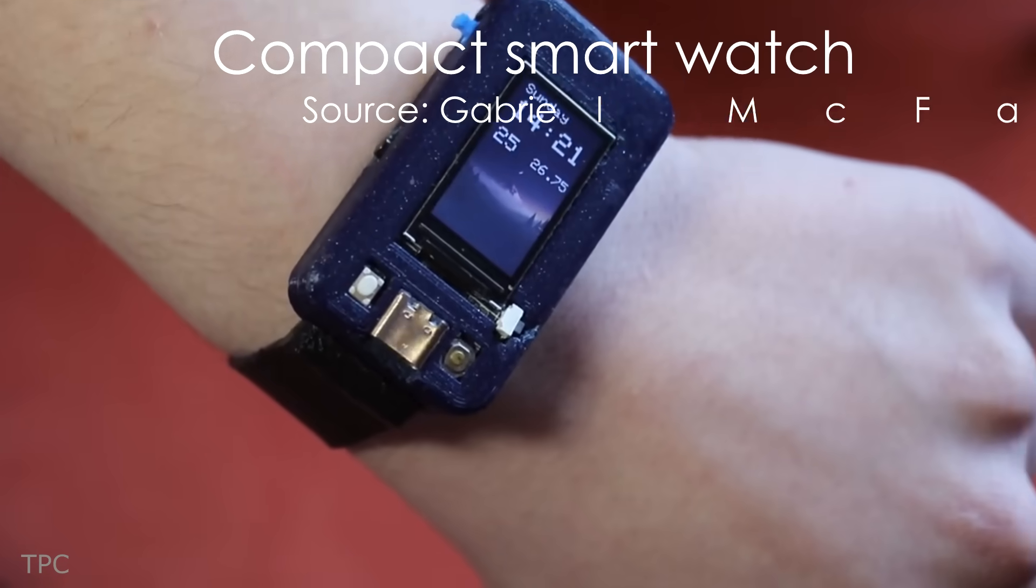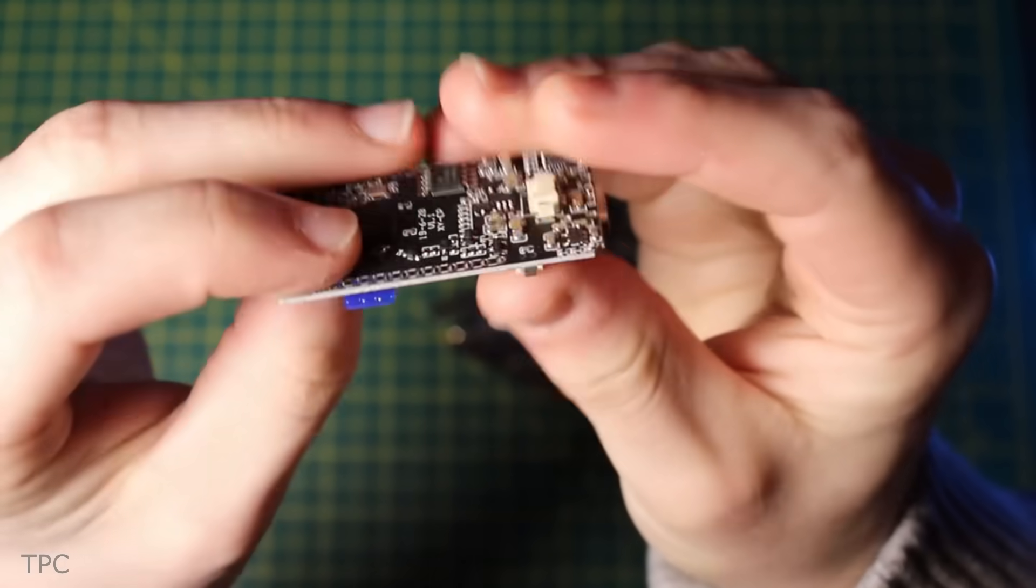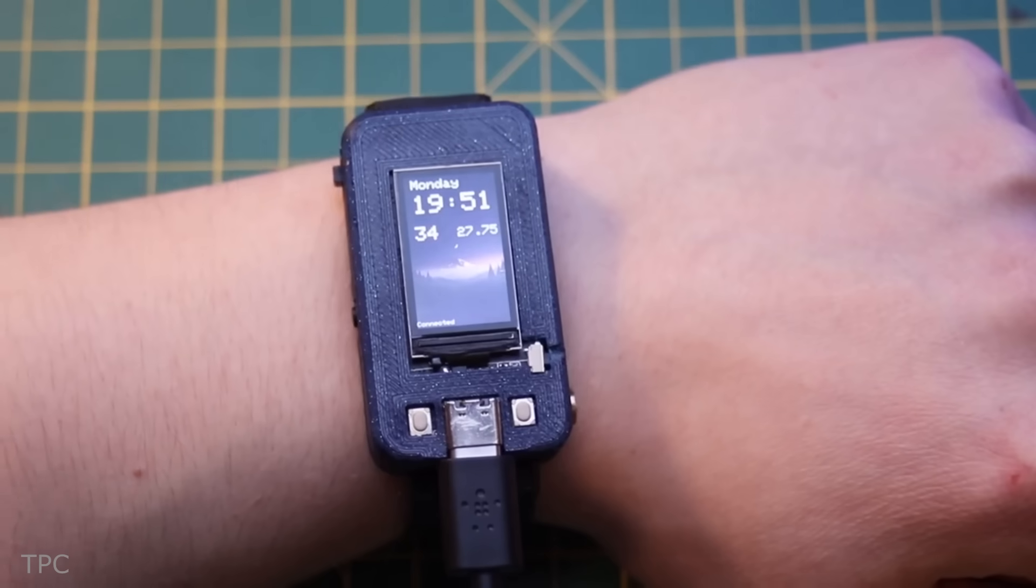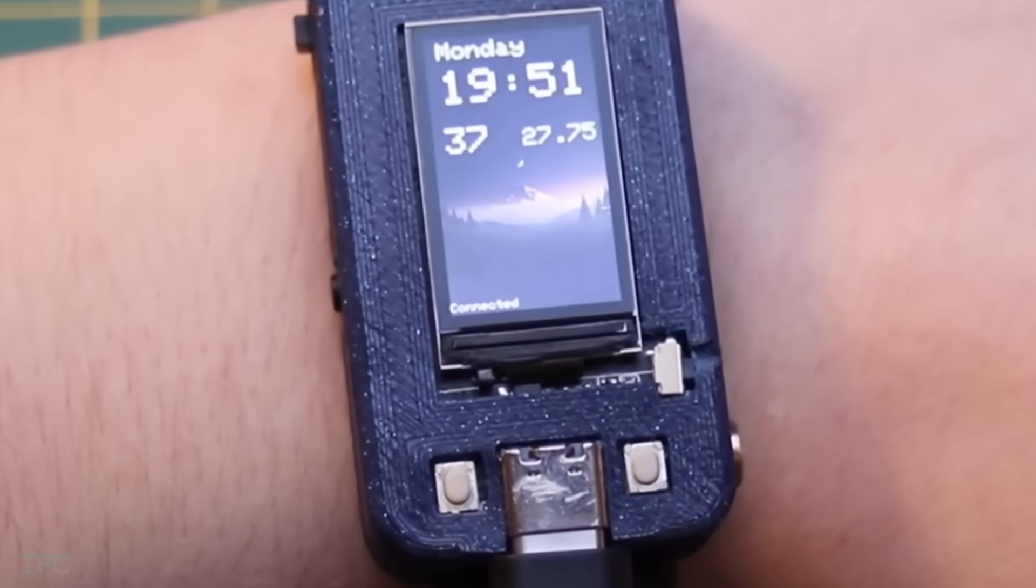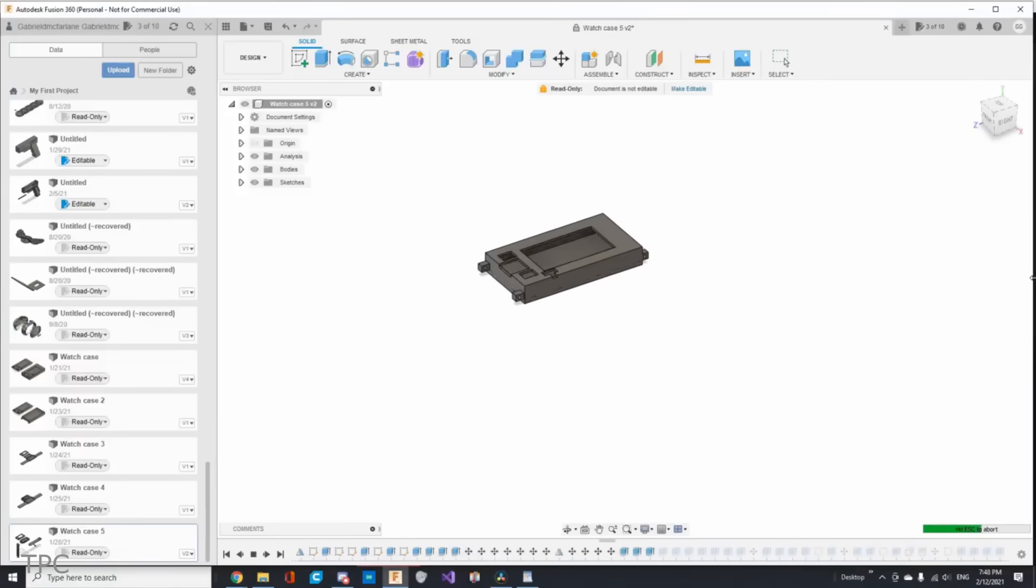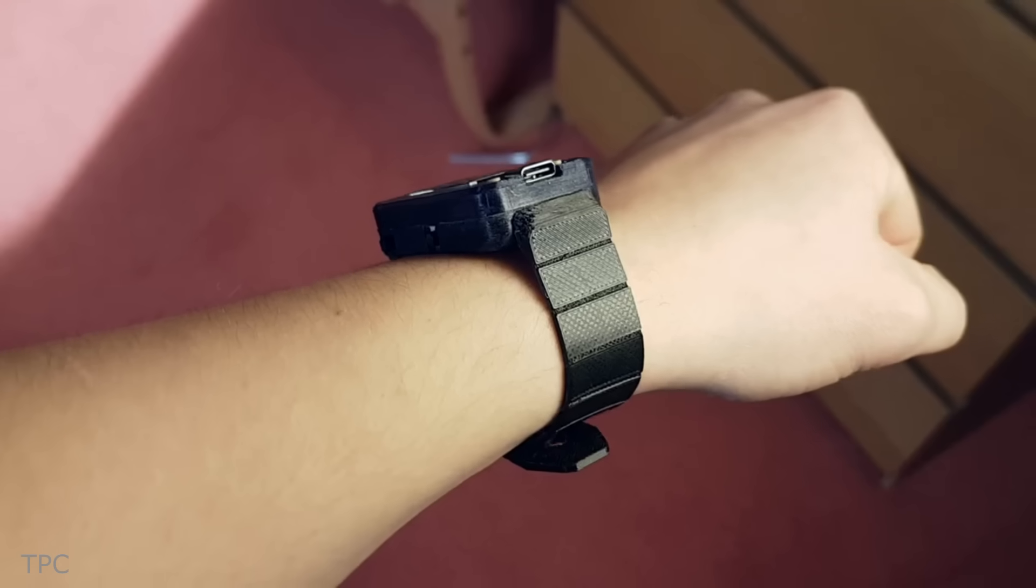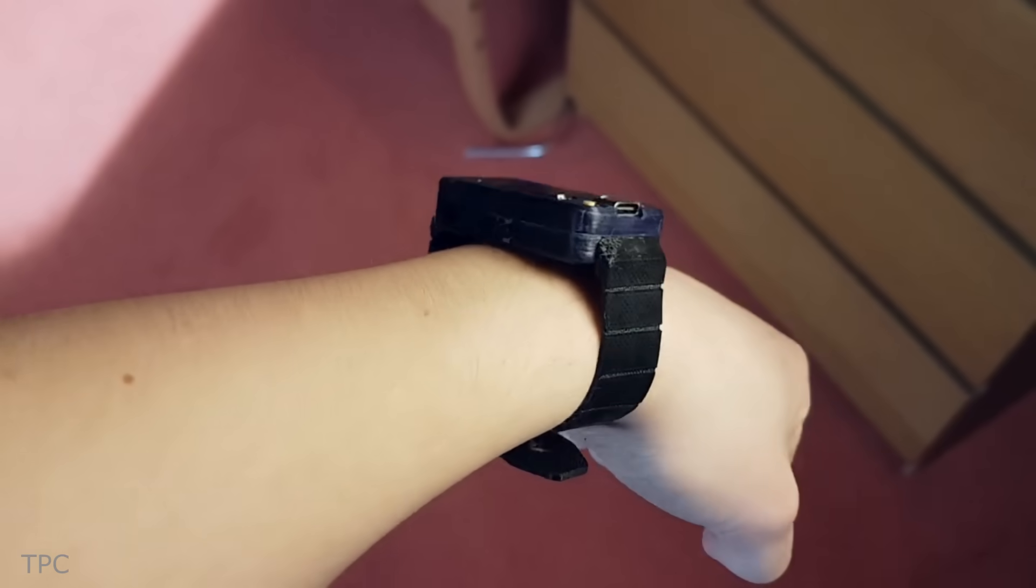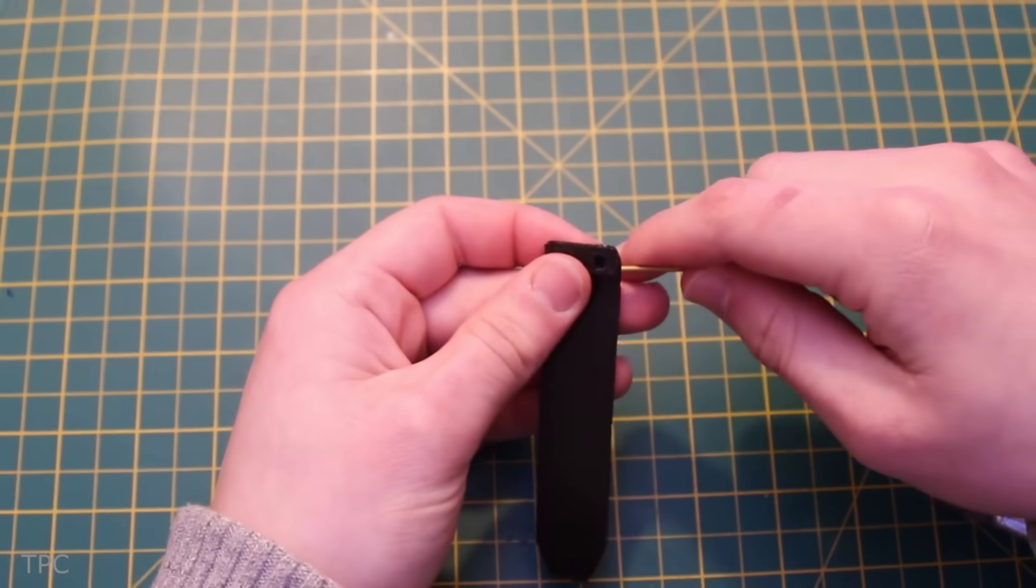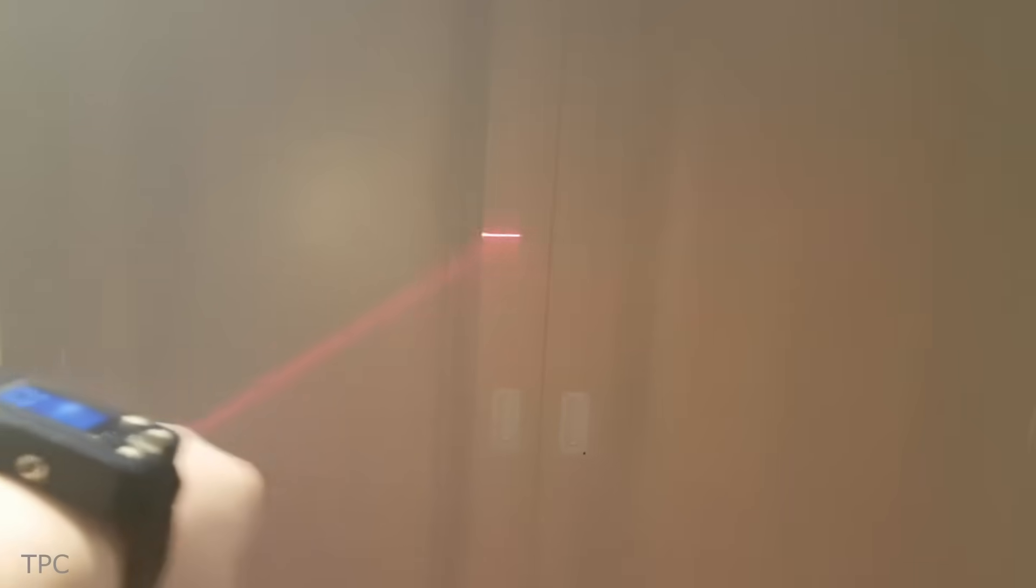Number 8. Next, we have the most compact smartwatch built by Gabriel. He used an ESP32 TTGO development board that comes with a 1.14-inch IPS display. It has both Wi-Fi and Bluetooth connectivity, allowing him to use it as a control for a home automation system. The board is housed within a 3D-printed casing, with a slot for an LED, a laser, a USB charging port, and some switches. The wrist straps are printed with flexible thermoplastic and attached to the watch with brass tubes. It took him around three months to complete the project, but the finished smartwatch is really cool.